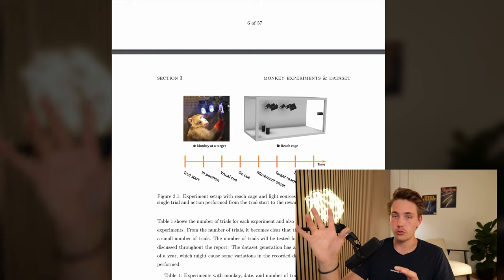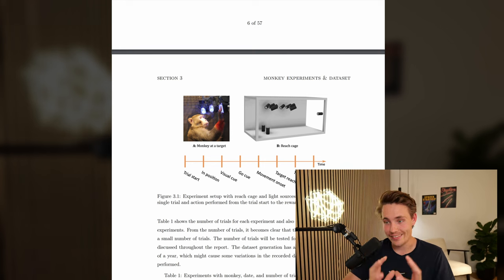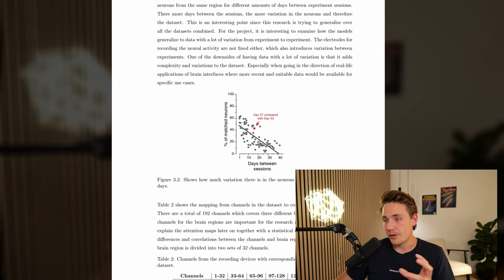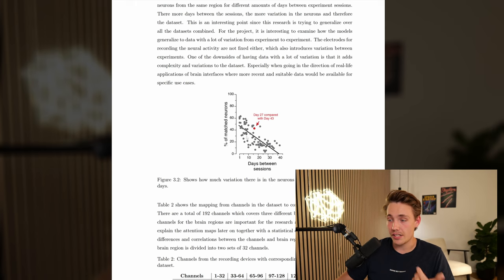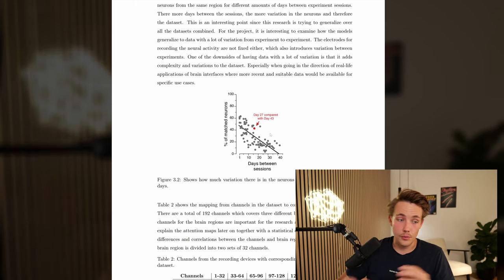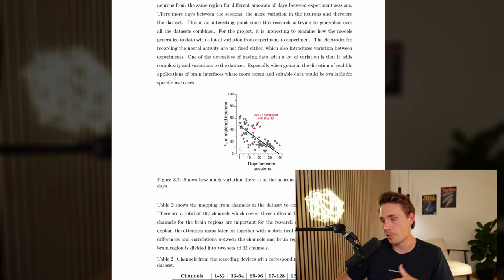Here we also have a graph of the day-to-day variation in the neurons over the number of days. We can see the days between sessions and the percentage of matched neurons in the dataset. The more days between sessions, the more variation and the more neurons have actually moved from day to day. There's actually a linear correlation between the number of days and the number of matched neurons in the dataset. This is a really big problem within brain computer interfaces in general. That's what I'm trying to tackle with this attention mechanism and the transformer model - to see if the attention mechanism can actually learn to attend to the most important neurons that maybe aren't changing as much from day to day.